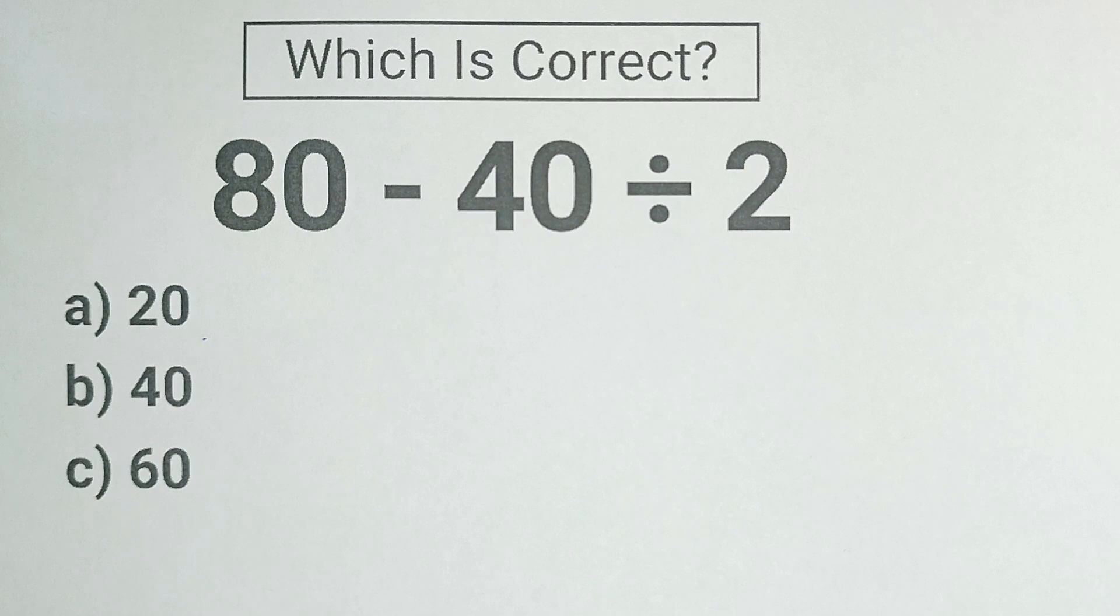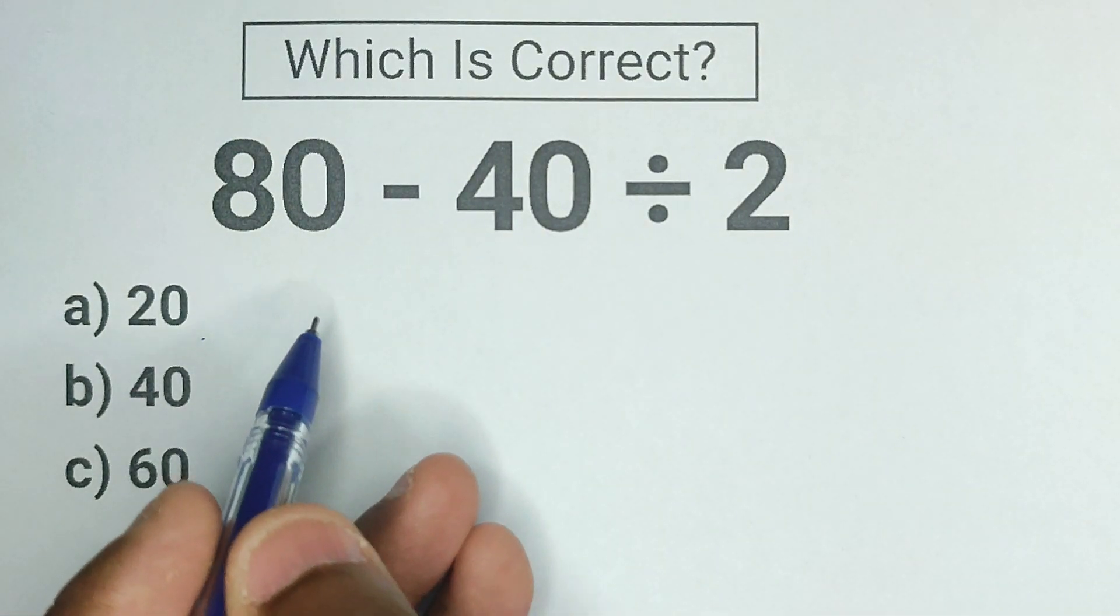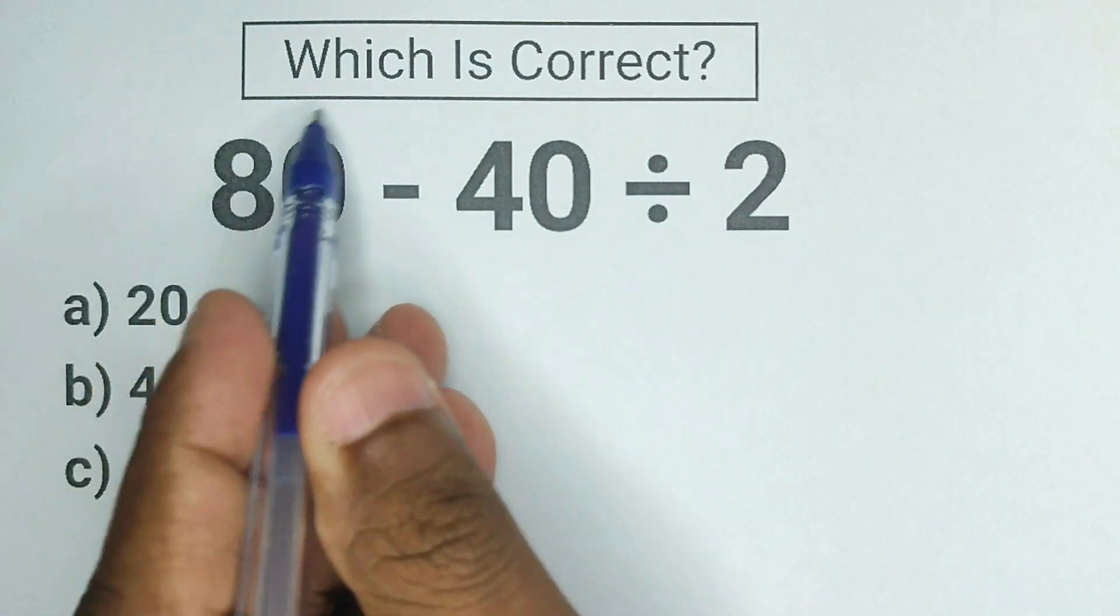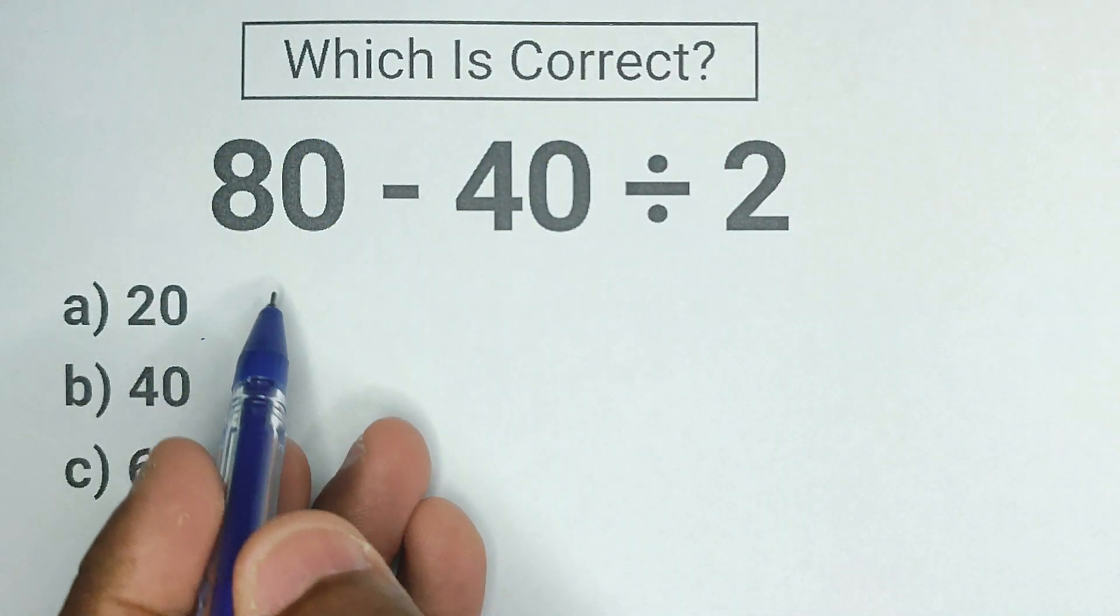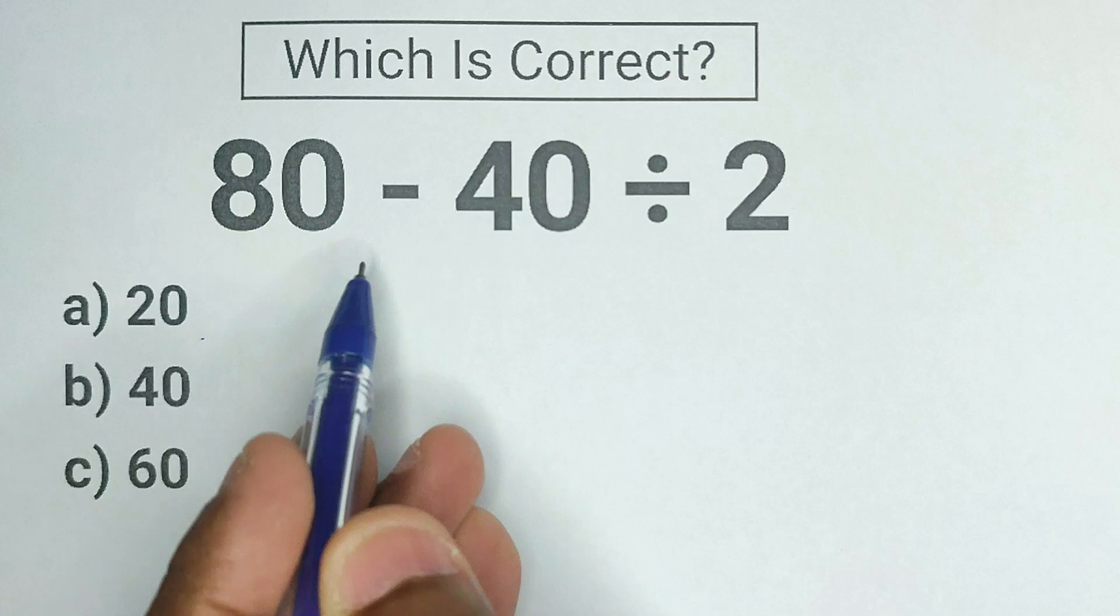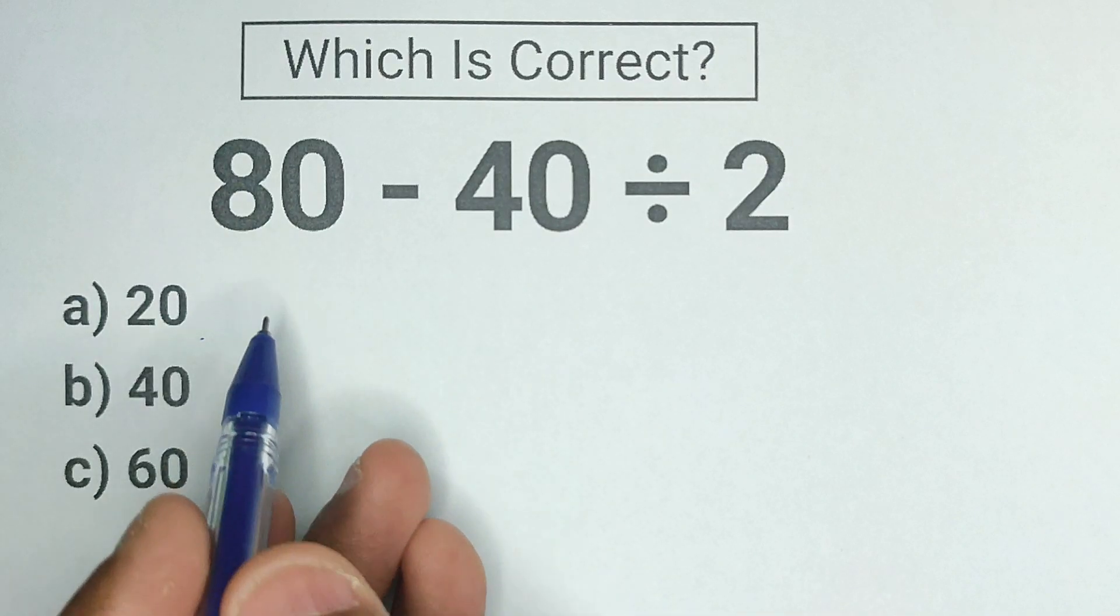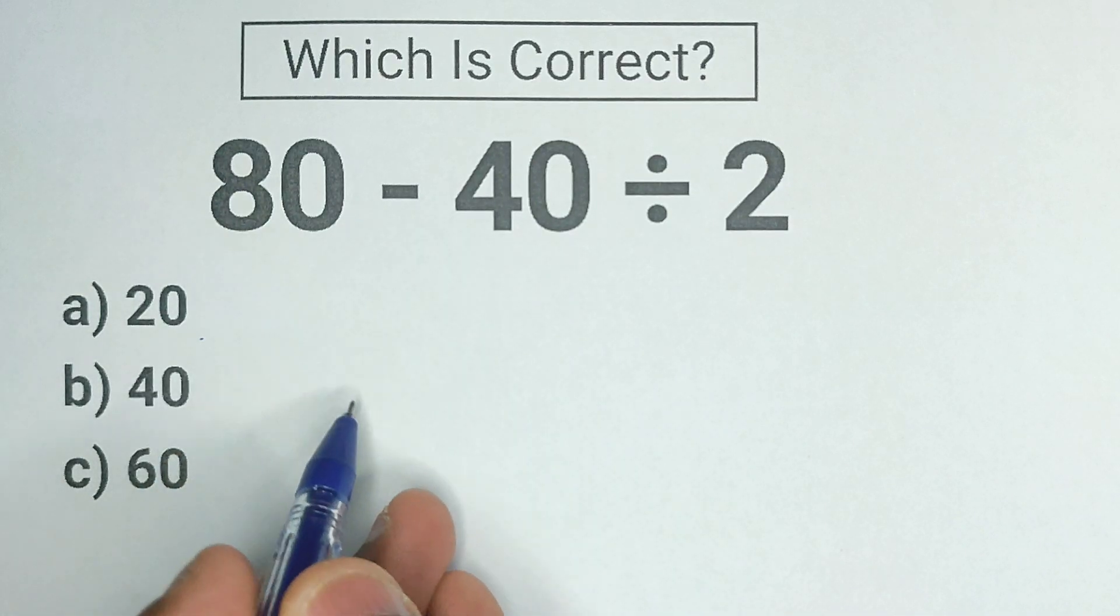We have 80 minus 40 divided by 2. So let's assume for this expression we need to do the subtraction first. 80 minus 40 is the subtraction, that is the first step that we need to do in this problem. And we all know that 80 minus 40 is equal to 40.